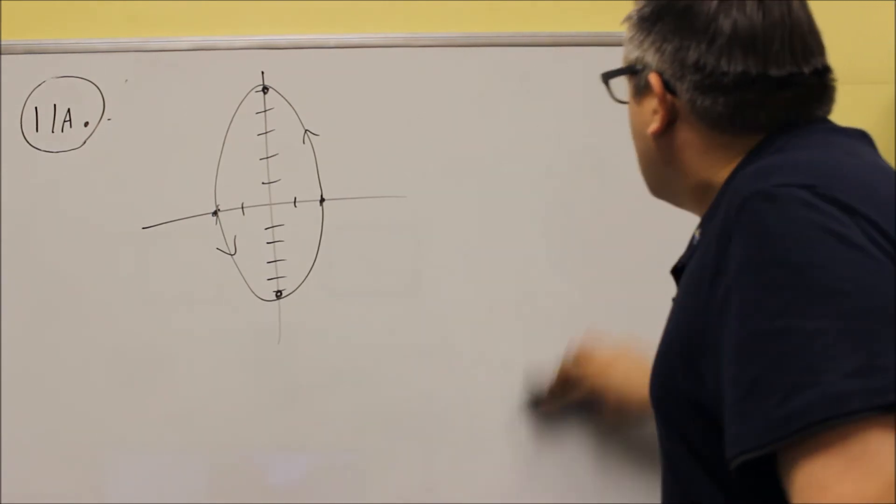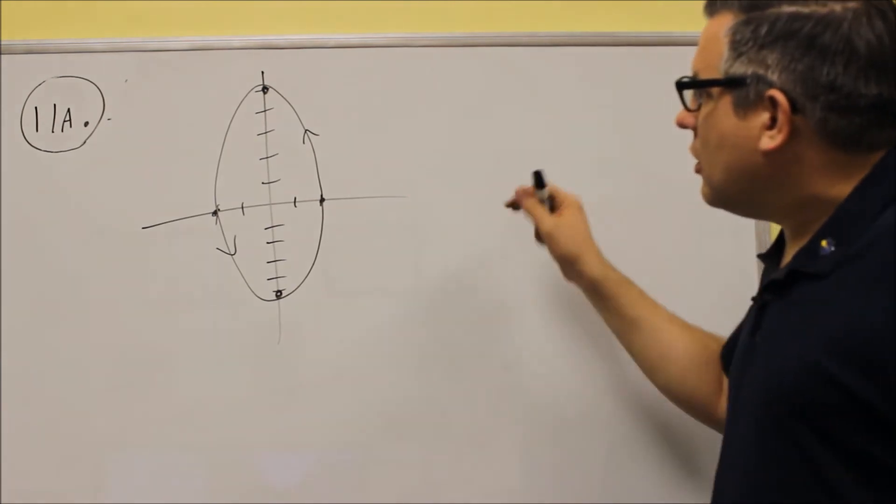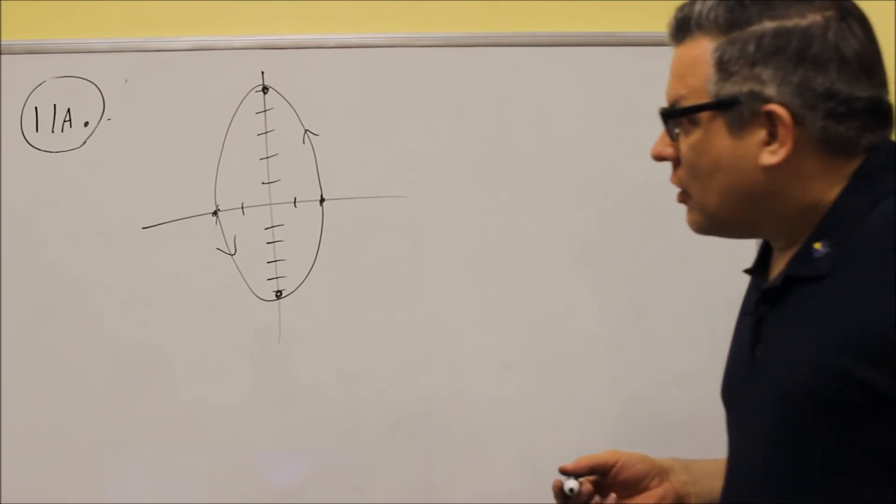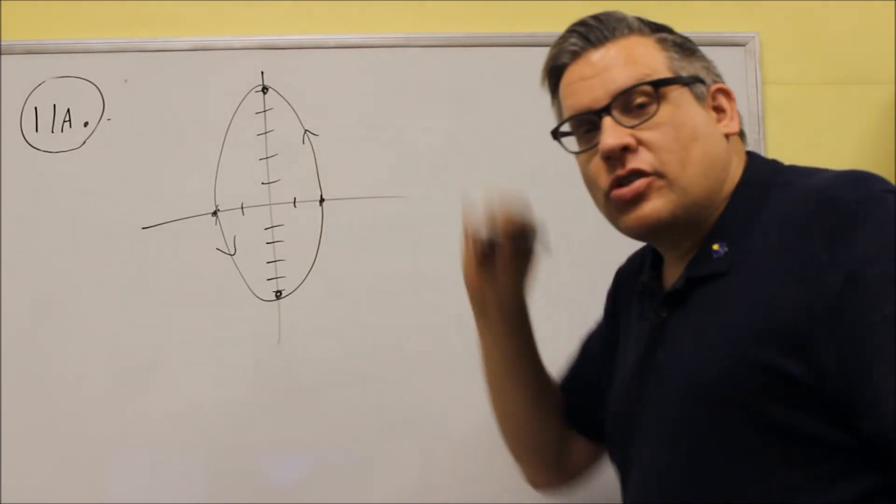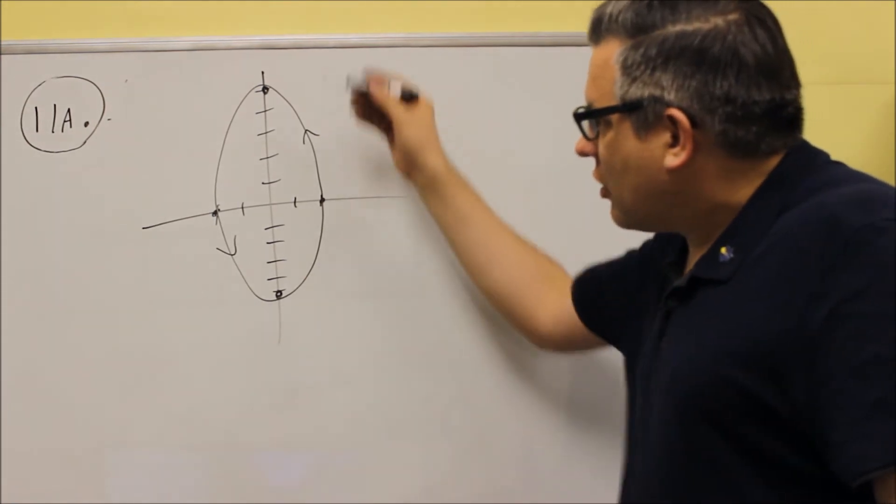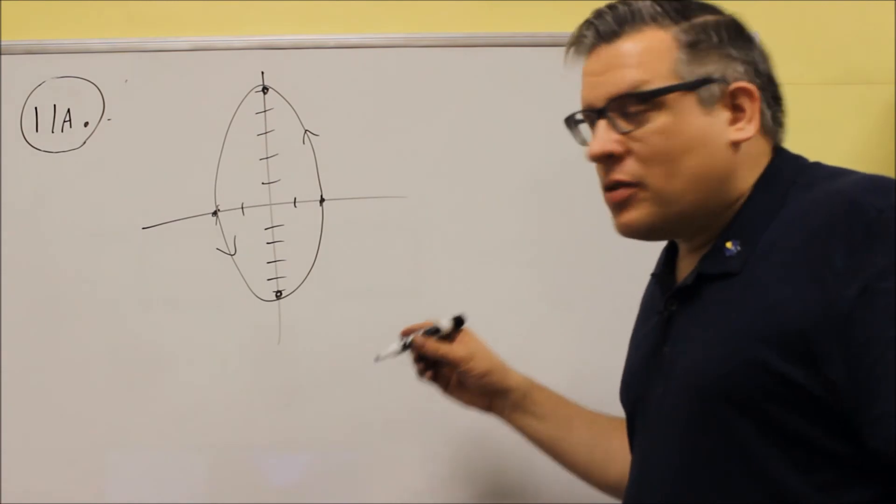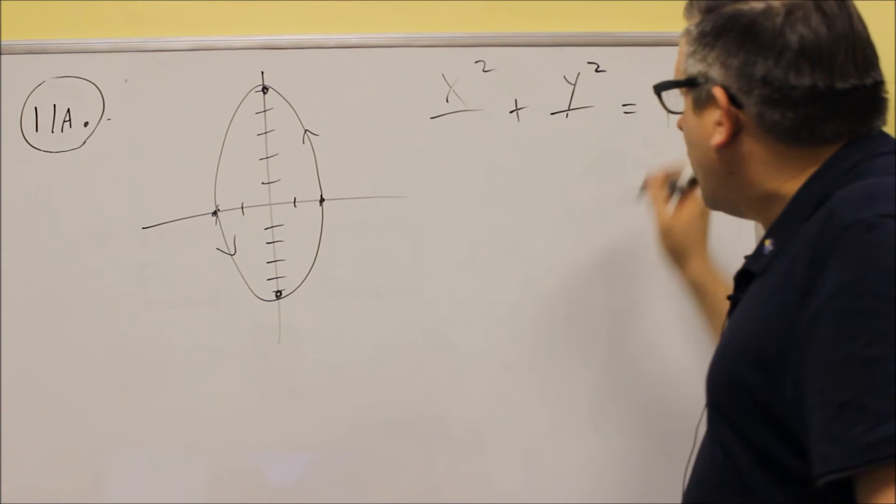So eliminate the parameter means we have to write the similar equation with x's and y's. So, one way that you can do this is just write the equation of the ellipse. This is an ellipse that's centered at zero, zero, and it opens up and down. So we have x squared plus y squared over something equals one. That's the format for an ellipse.